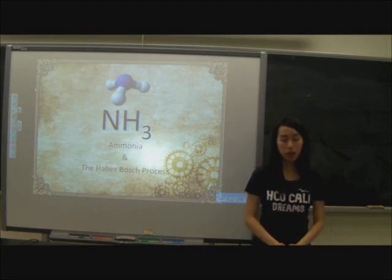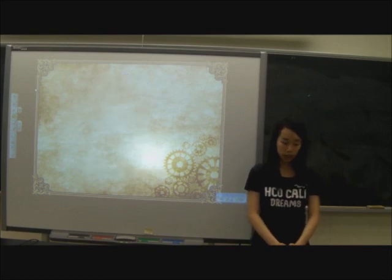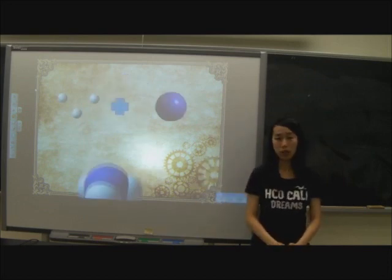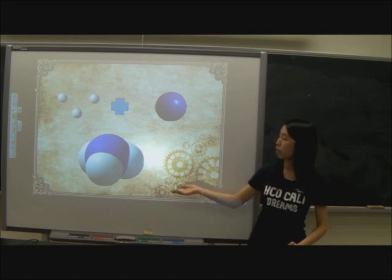Ammonia, as you know, is a compound of nitrogen and hydrogen with a formula of NH3. It's made of three hydrogen atoms and one nitrogen atom that gives us the ammonia molecule.